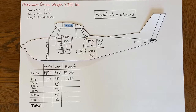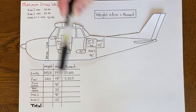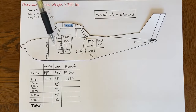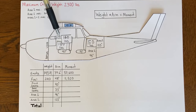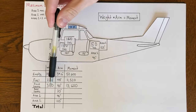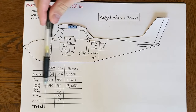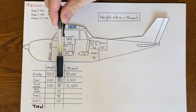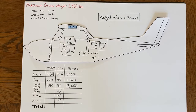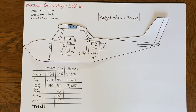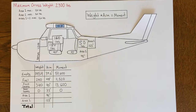For the front seats, we have two people — 180 and 160 pounds — totaling 340 pounds. The moment is 340 pounds times 40 inches equals 13,600 inch-pounds. For the rear seats, we don't have anyone back there, so that's zero weight and zero moment.